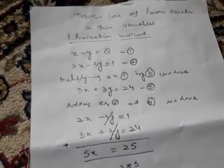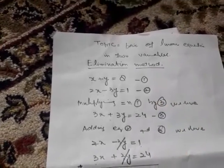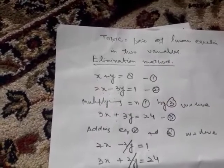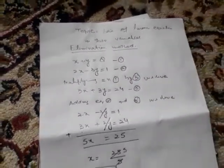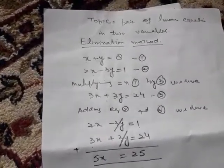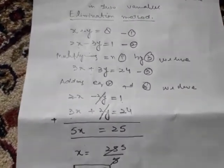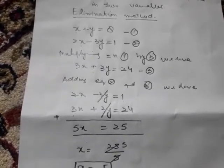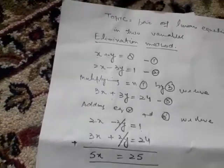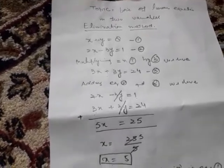Now we have one variable, x equals 5. We will substitute this value into equation first, like in the previous video with the substitution method. When x equals 5, this becomes 5 plus y equals 8.